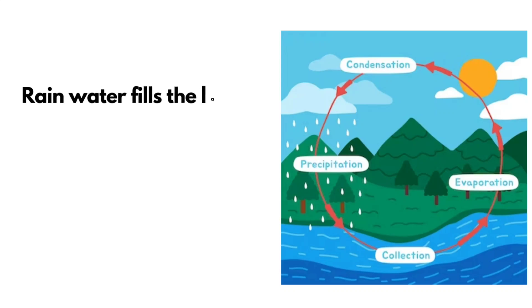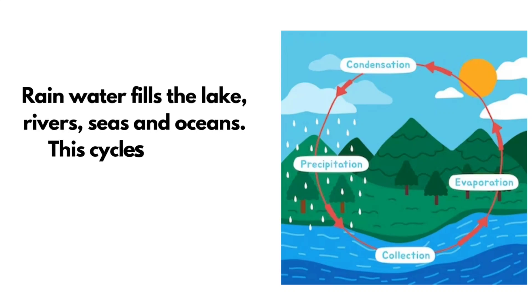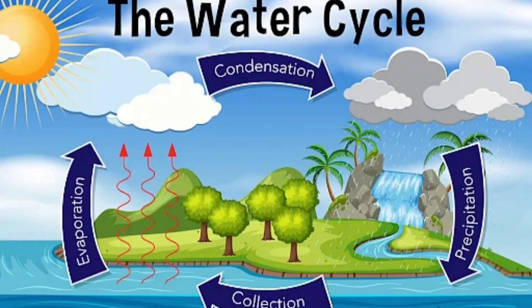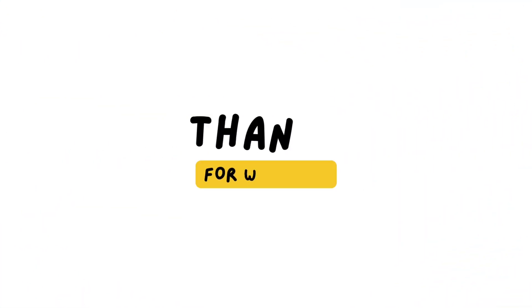Rain water fills the lakes, rivers, seas and oceans. This cycle goes on continuously in nature: evaporation, condensation, precipitation, collection. This is the complete water cycle.